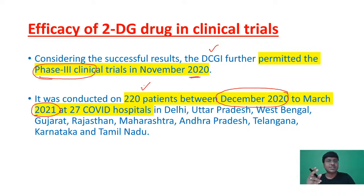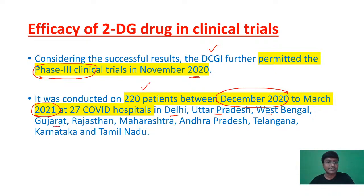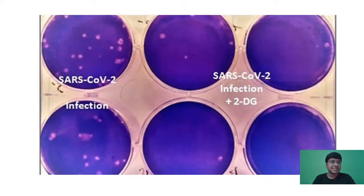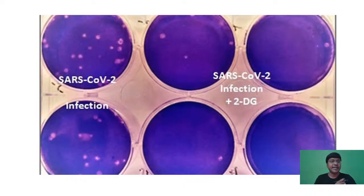Phase 3 trials were conducted in approximately 27 COVID hospitals all over the country, including in Delhi, Uttar Pradesh, West Bengal, Gujarat, Rajasthan, Maharashtra, Andhra Pradesh, Telangana, Karnataka, and Tamil Nadu. In all these areas the Phase 3 trials were conducted. Images released by DRDO showed chambers with SARS-CoV-2 virus infection where, after 2DG was added, the chambers were completely free from the COVID-19 virus.